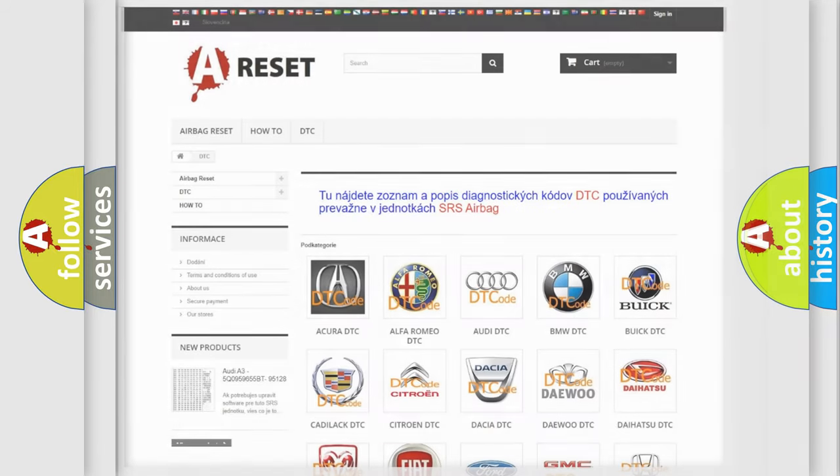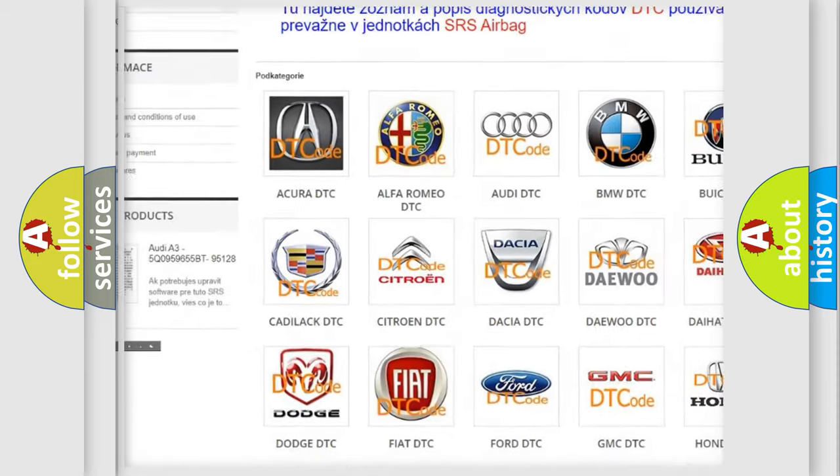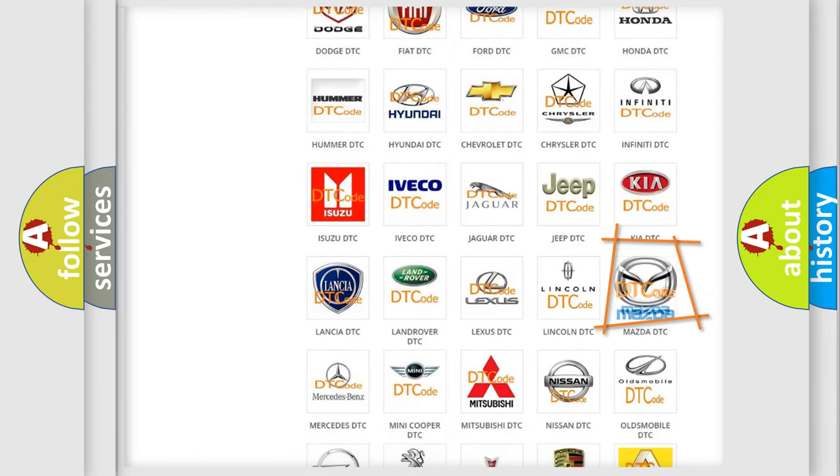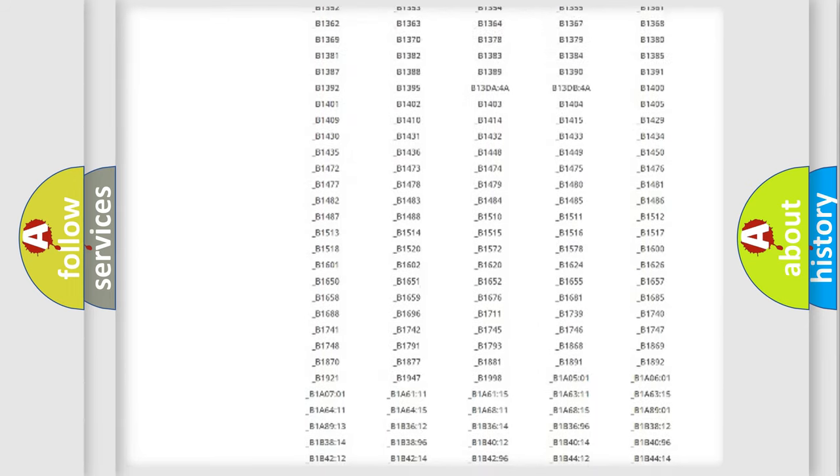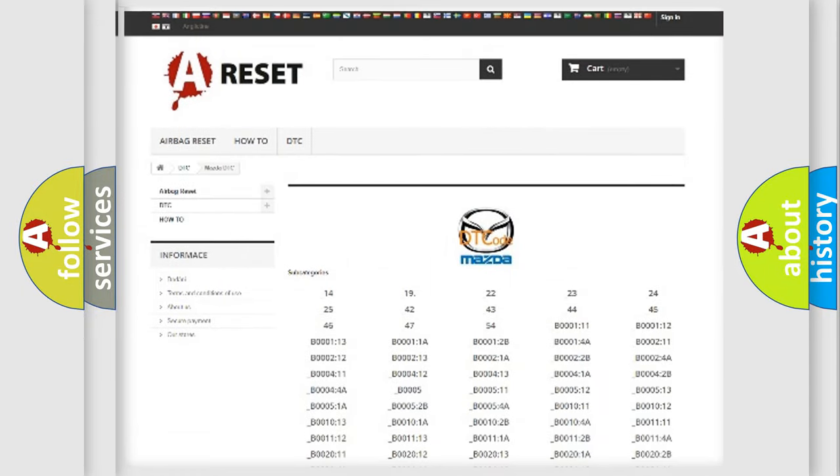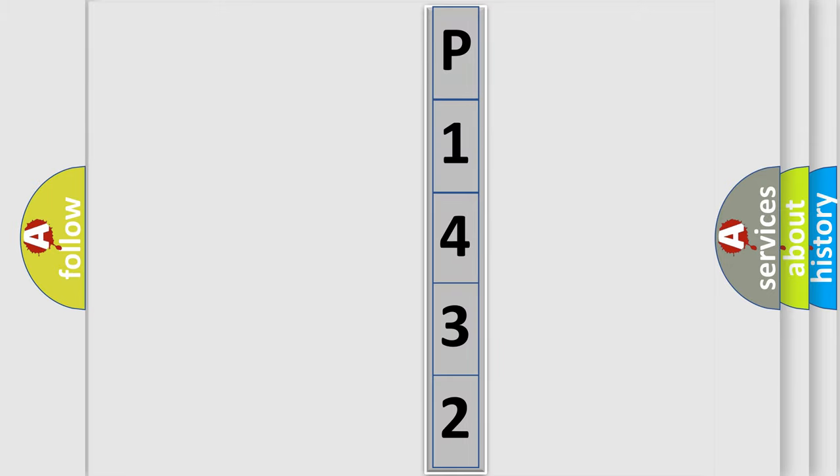Our website airbagreset.sk produces useful videos for you. You do not have to go through the OBD2 protocol anymore to know how to troubleshoot any car breakdown. You will find all the diagnostic codes that can be diagnosed in Mazda vehicles, and also many other useful things. The following demonstration will help you look into the world of software for car control units.